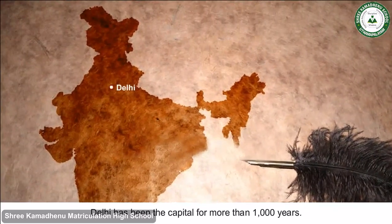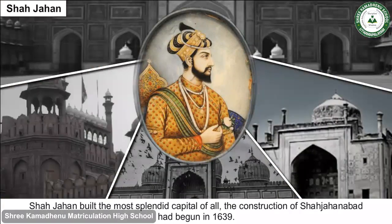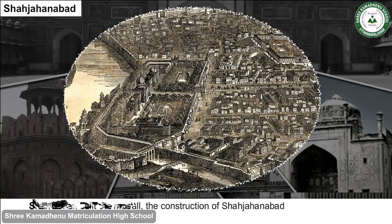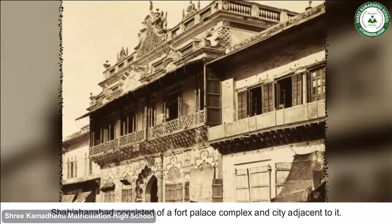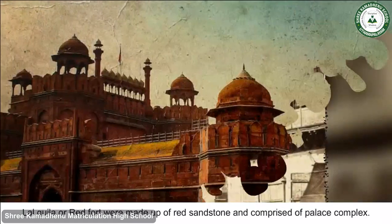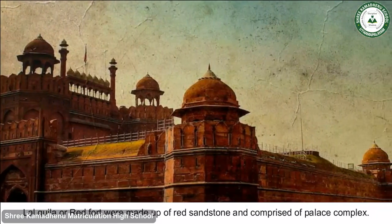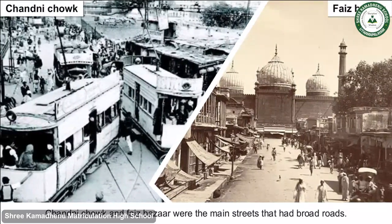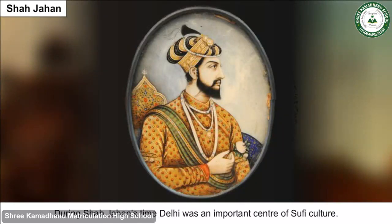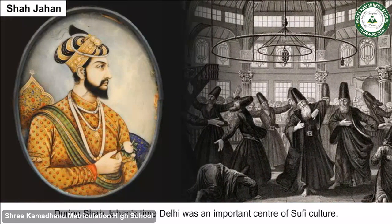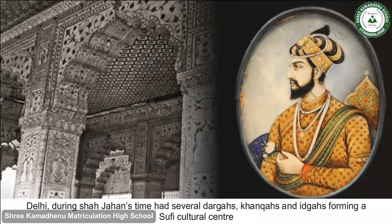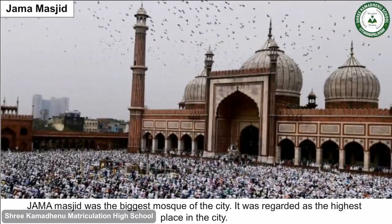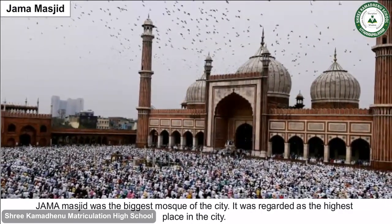Delhi has been the capital for more than 1000 years. Shah Jahan built the most splendid capital of all; the construction of Shahjahabad had begun in 1639. Shahjahabad consisted of a fort-palace complex and the city adjacent to it. Lal Kila, the Red Fort, was made of red sandstone and comprised the palace complex. Chandni Chowk and Faiz Bazaar were the main streets with broad roads. During Shah Jahan's time, Delhi was an important center of Sufi culture, with several Dargahs, Khankahs and Idgahs forming a Sufi cultural center.